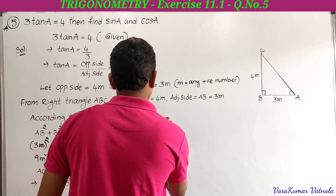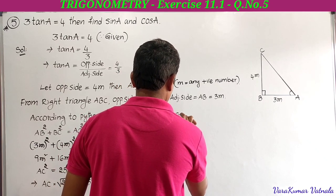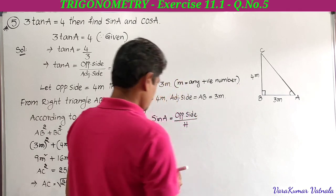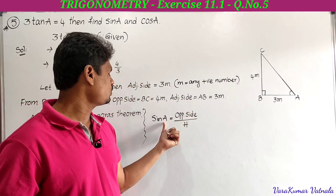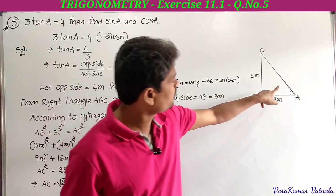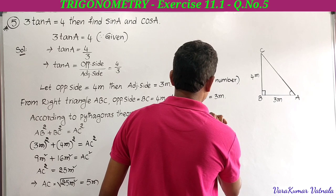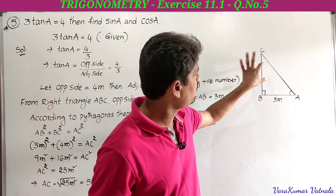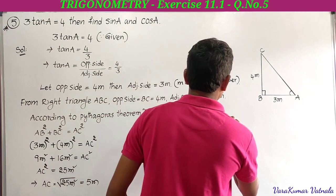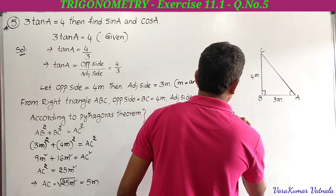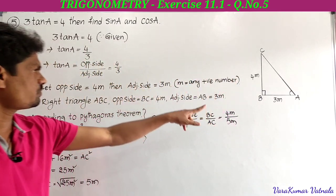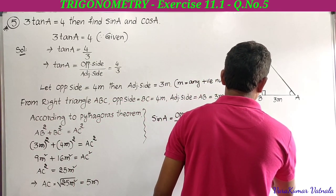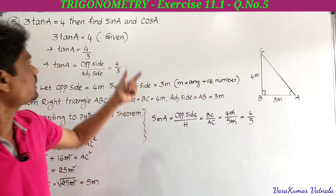Now we have all three sides. Sine A equals opposite side to angle A divided by hypotenuse. Opposite side is BC, hypotenuse is AC. BC equals 4m and AC equals 5m. M gets cancelled, giving sine A equals 4 by 5.